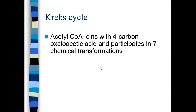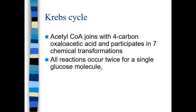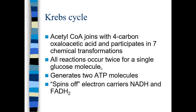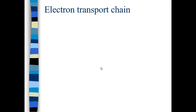Then we get to the Krebs cycle. Acetyl-CoA, formed by the preparatory reaction, joins with a four-carbon substrate called oxaloacetic acid and participates in seven chemical transformations that form a cycle. All reactions occur twice for a single glucose molecule, because there are two acetyl-CoA molecules for every glucose, causing the cycle to turn twice. This generates two more ATP molecules and spins off more electrons, giving us carriers NADH and FADH2, which then go to the electron transport chain.